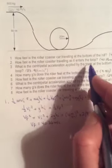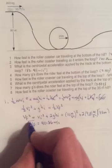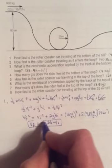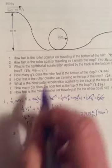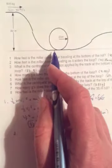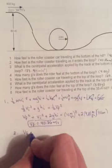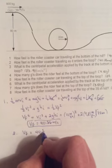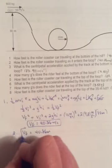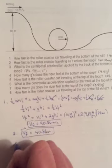Then it says how fast is the roller coaster traveling as it enters the loop. Well it hasn't changed height, and there's no friction. So as it enters the loop, it's at the same height as when it got to the bottom of the hill. So it has to have the same speed.